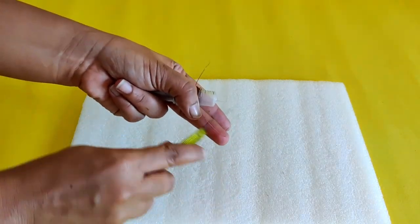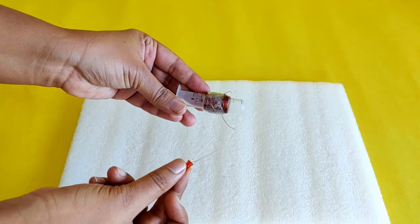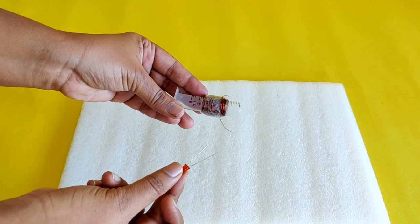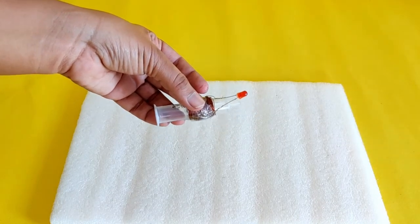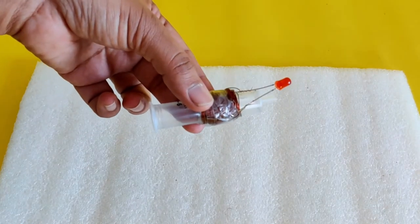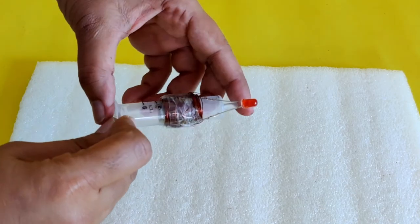Now scrape the insulation off the ends of the wire using a cutter and connect an LED to the ends of the wire. With this, the syringe generator setup is now ready. Place the magnets inside the cylinder of the syringe and close the end of the syringe with your thumb.